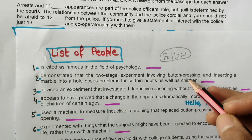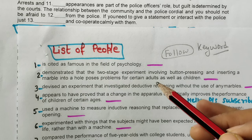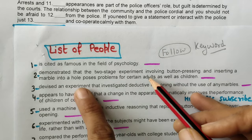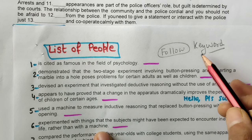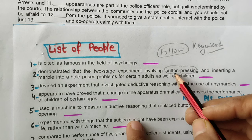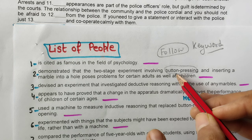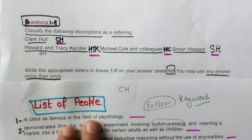While solving any reading passage, please follow your keyword strategy. Read the question statement, understand it, and come out with two or three keywords. Remember, every word is not a keyword — try to find something distinctive. When you get those keywords in the paragraph, don't stop there; try to understand the surrounding text as well, because the answer may be just above or below the keyword.